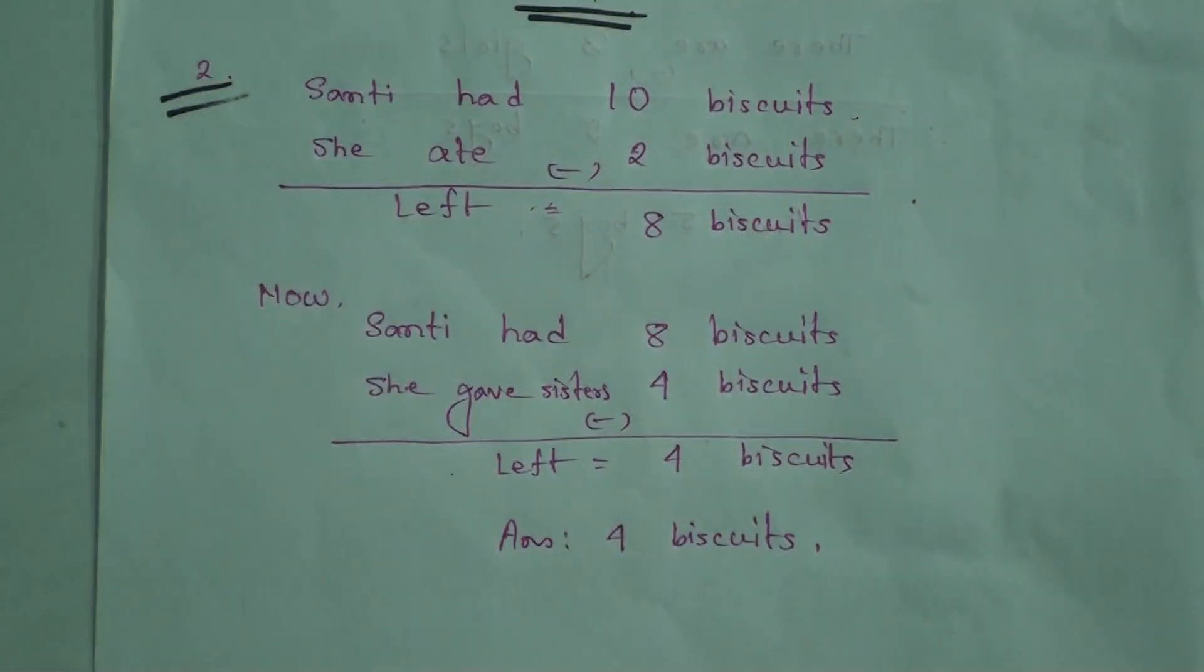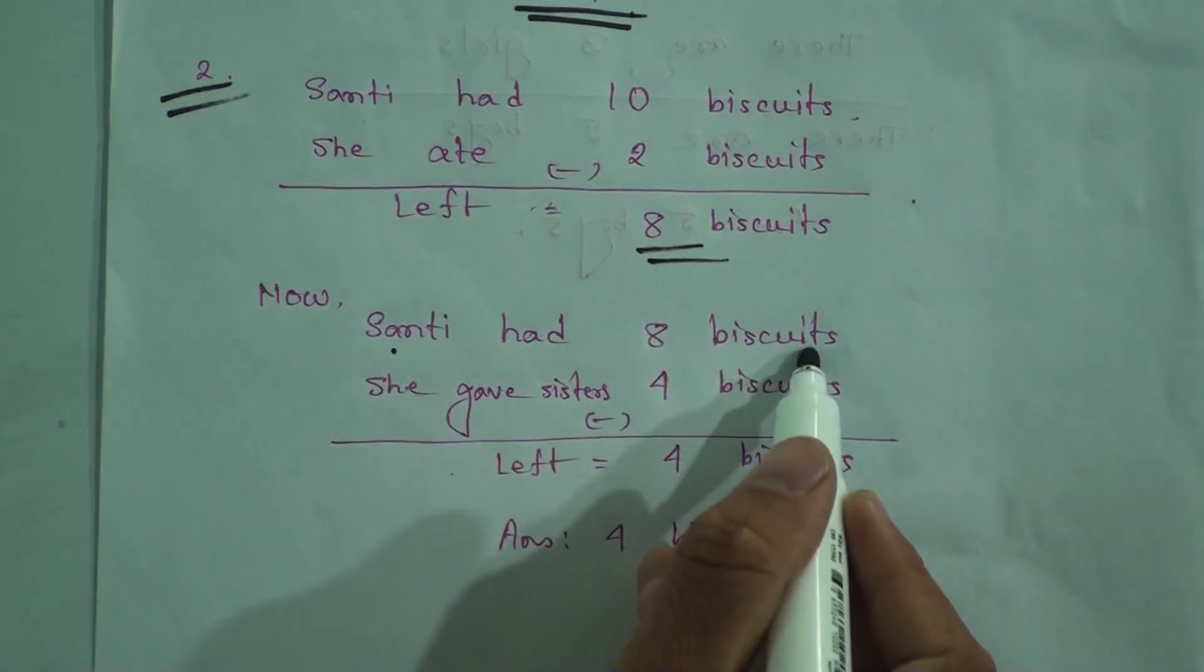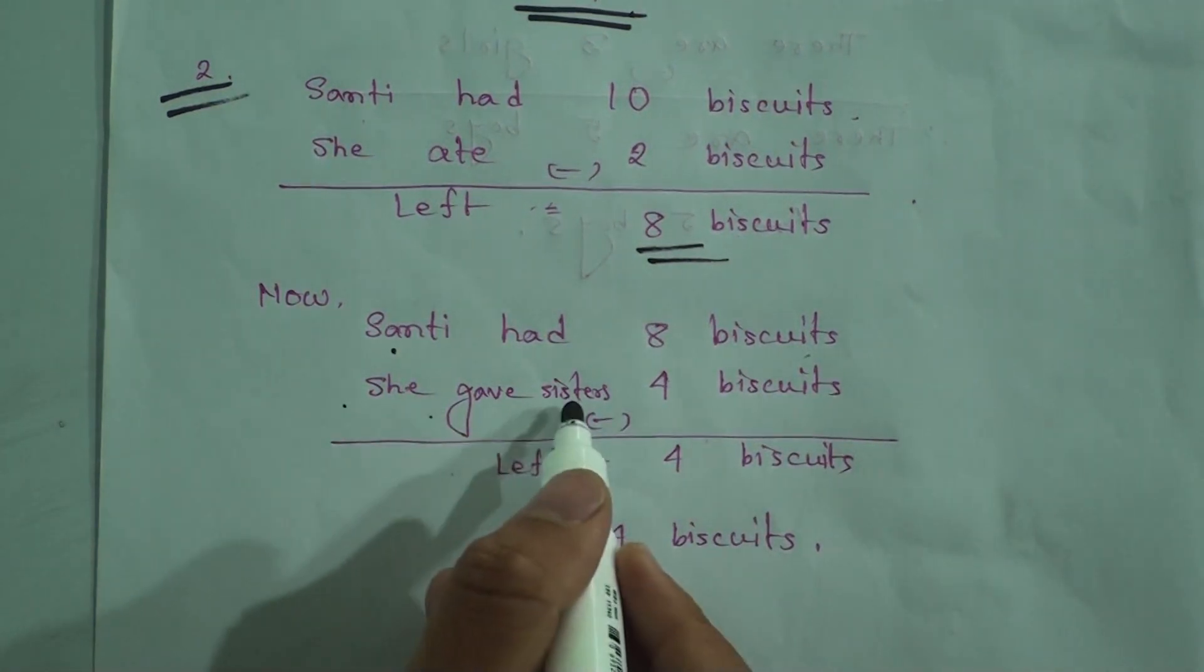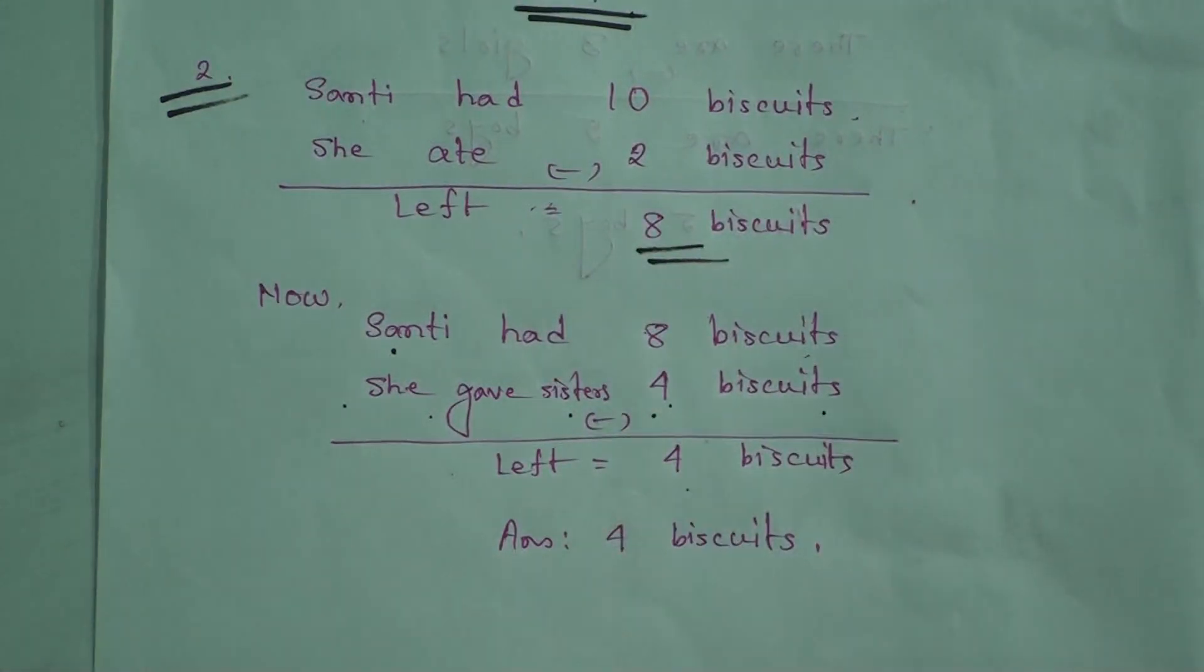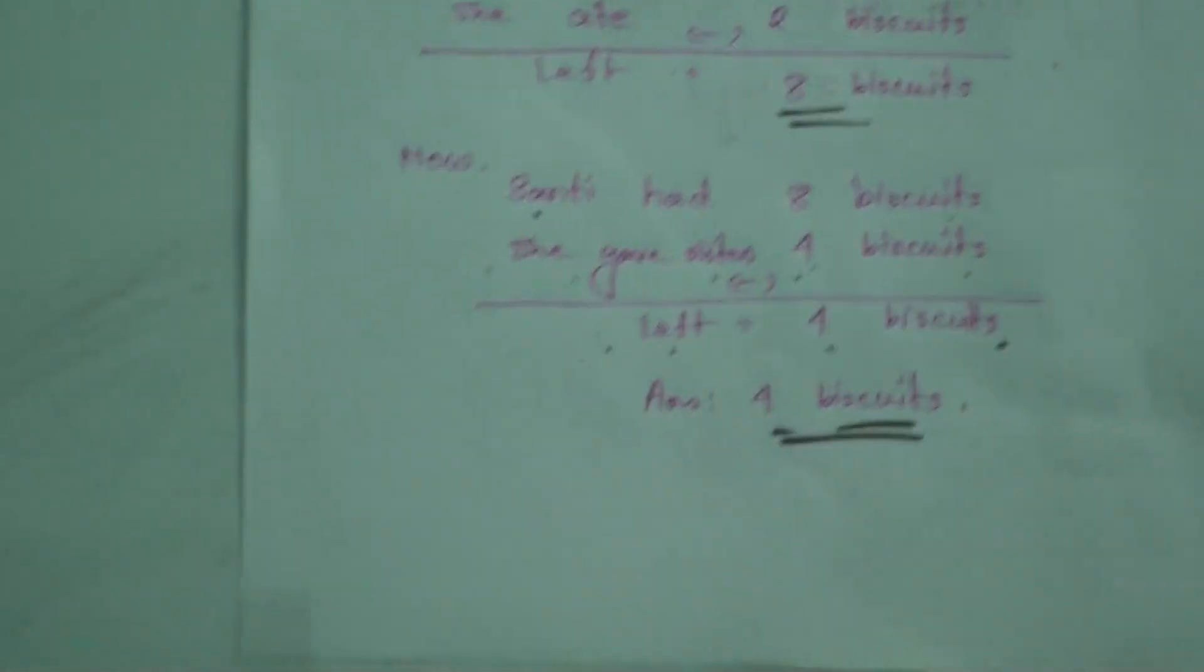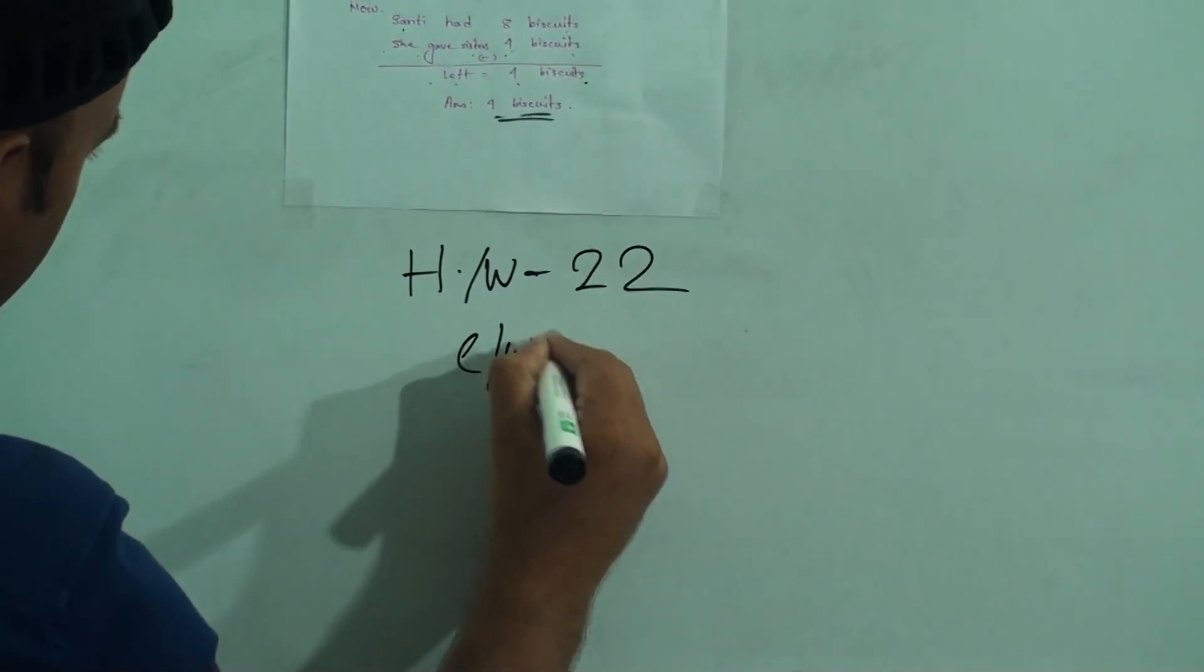After eating 2 biscuits, Shanti had 8 biscuits. Again she gave sister 4 biscuits. Now subtract 4 from 8, it will be 4. So finally left is 4 biscuits. The answer is 4 biscuits. This is your HW 22.